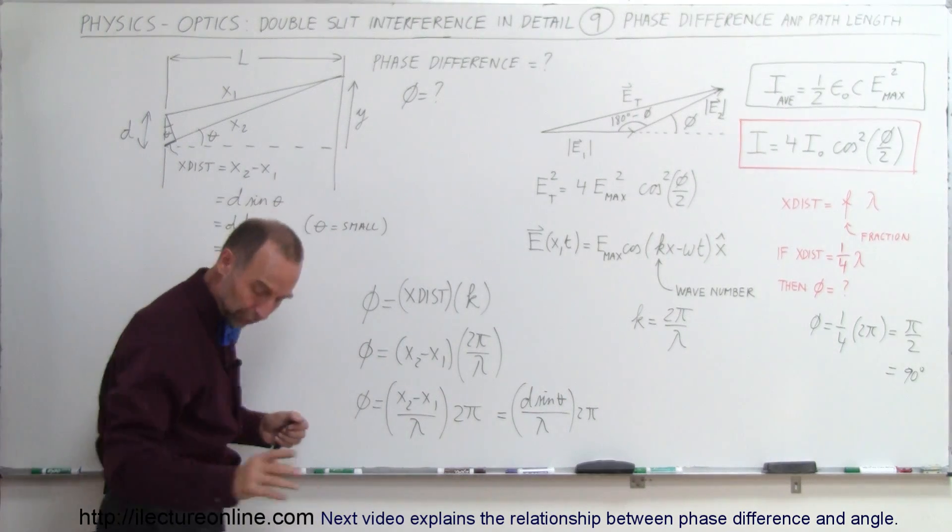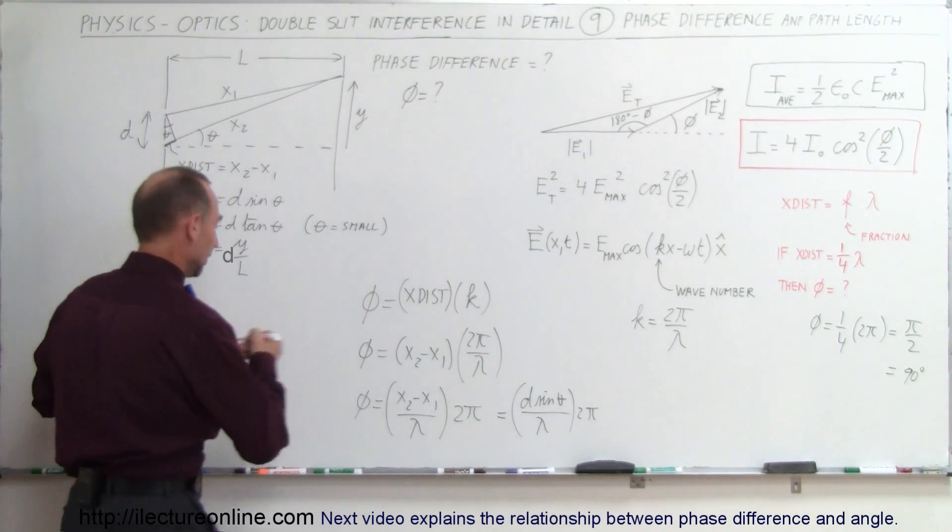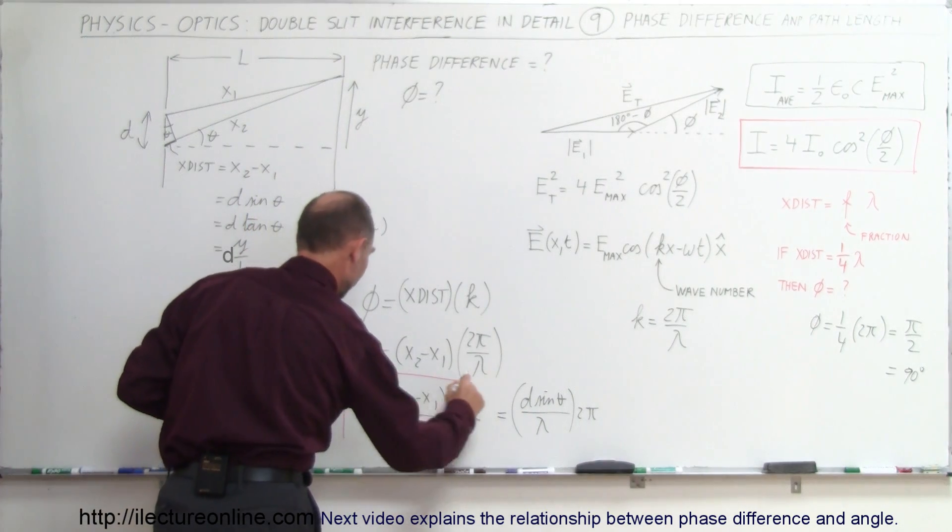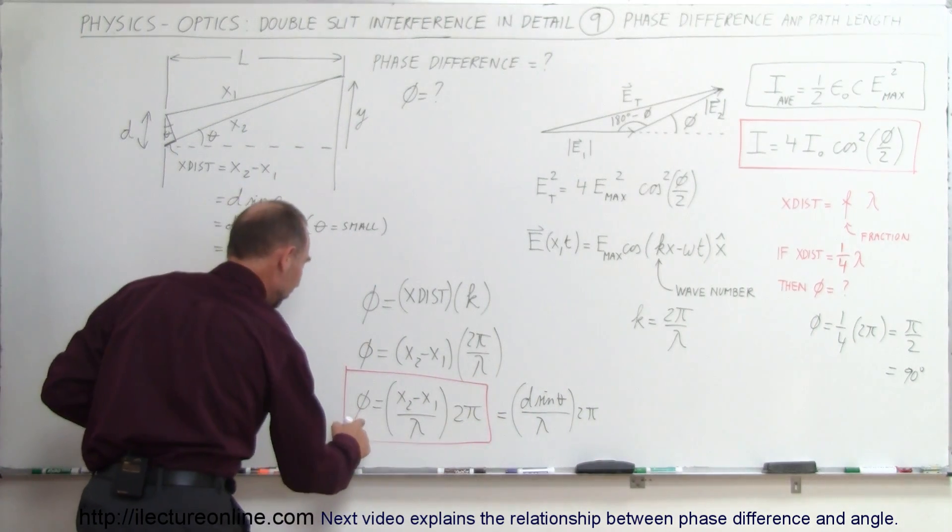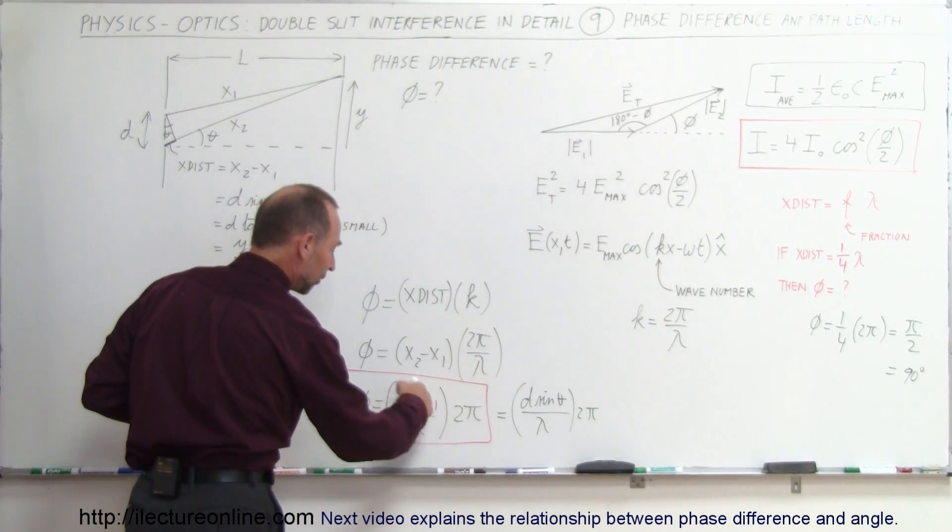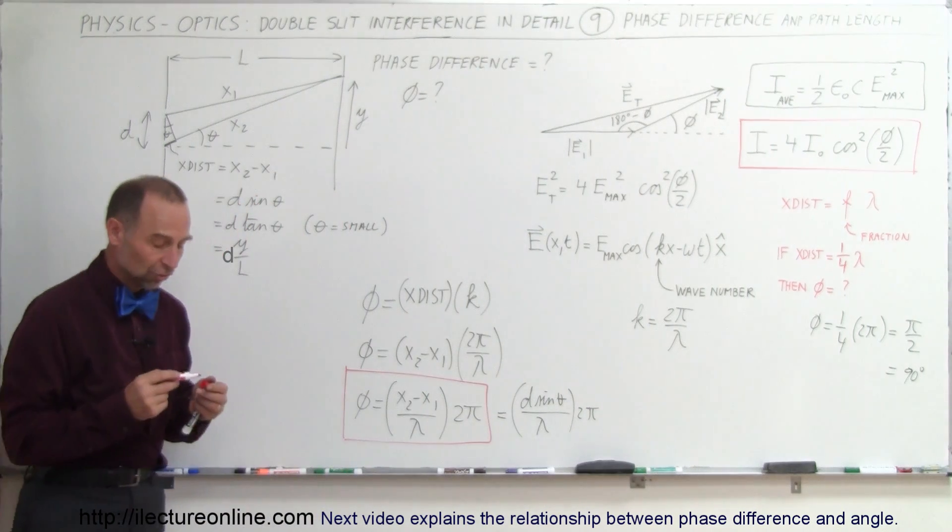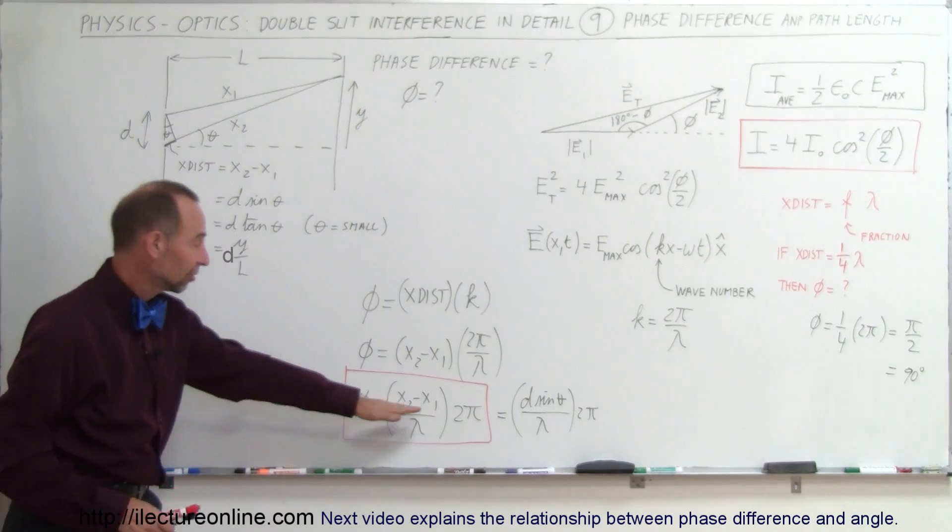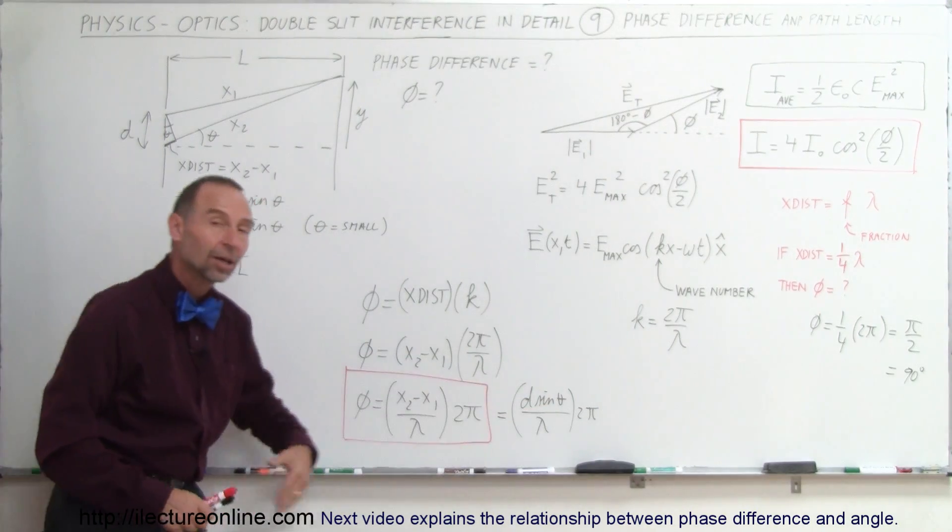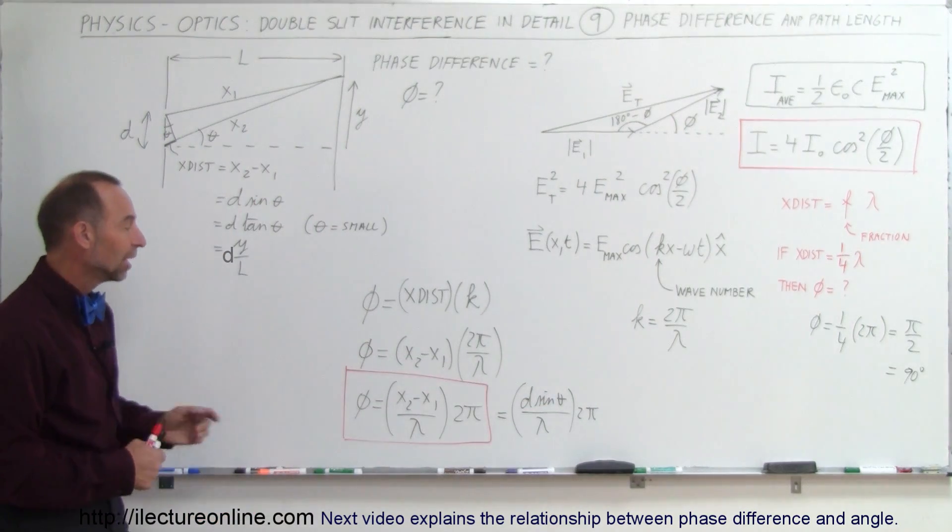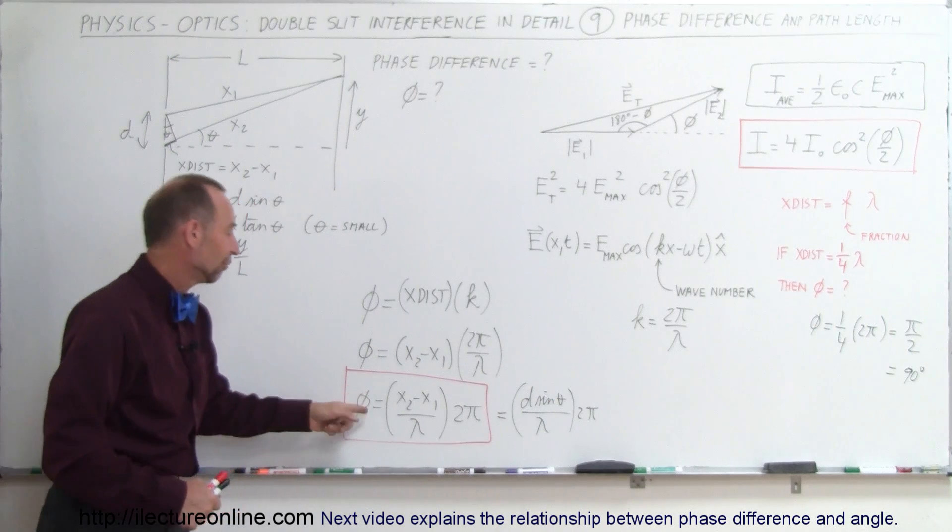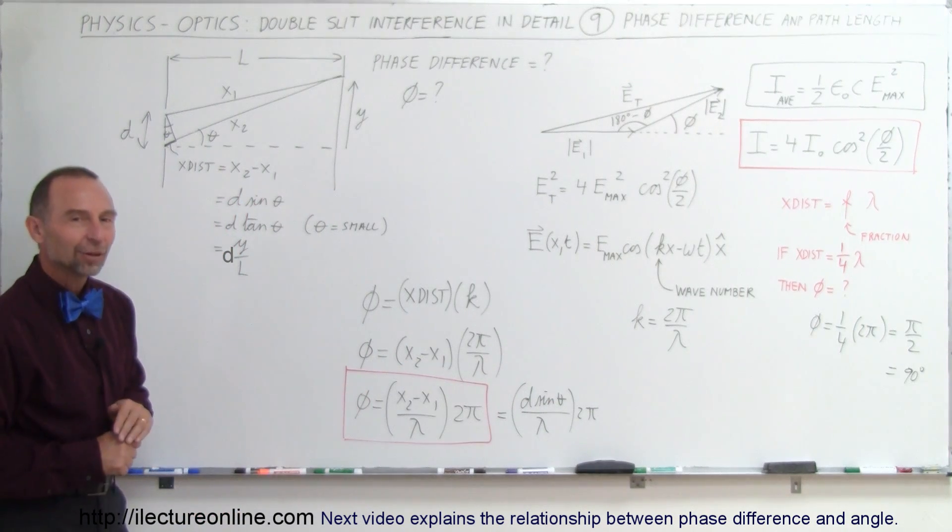What we're interested in is finding the phase difference as a function of the extra distance traveled. And if you realize that the extra distance traveled equals d sine theta, we can then come up with an equation that relates theta to phi. And that we will do in the next video.